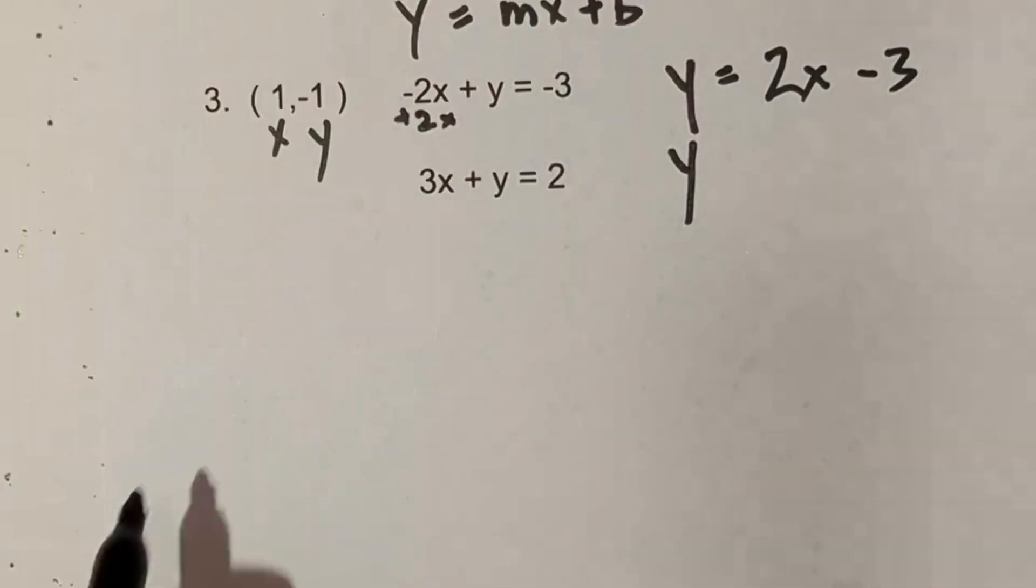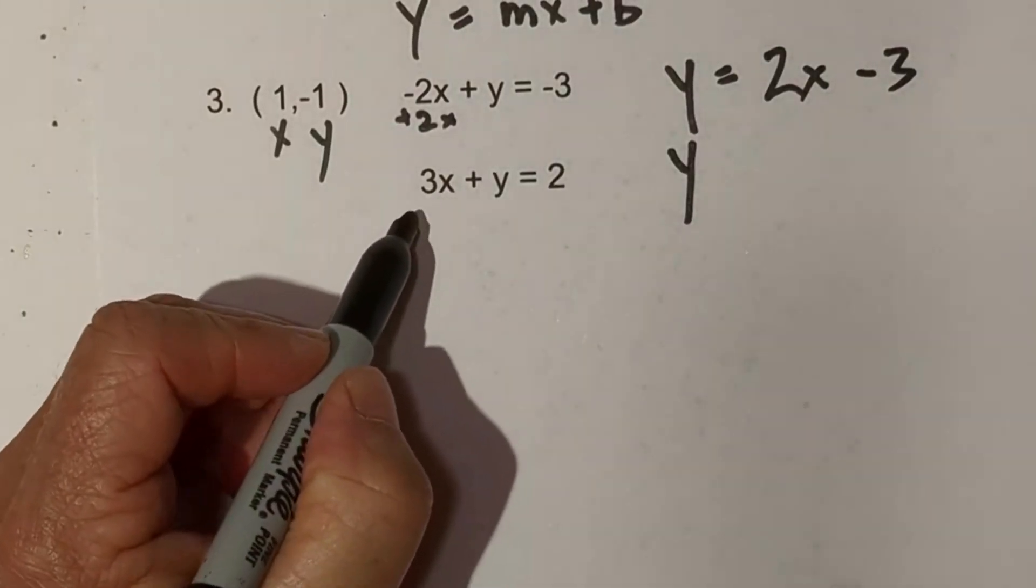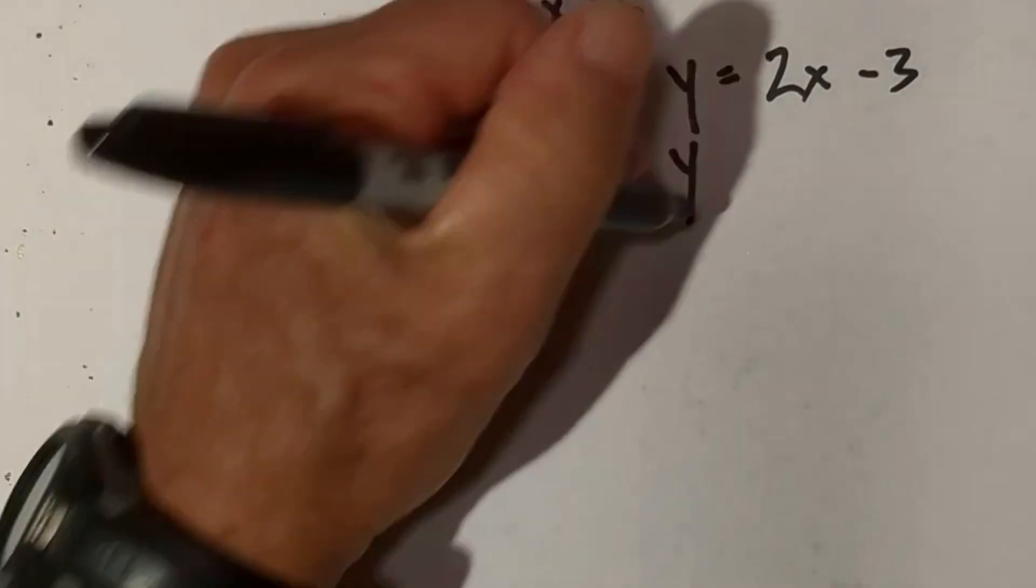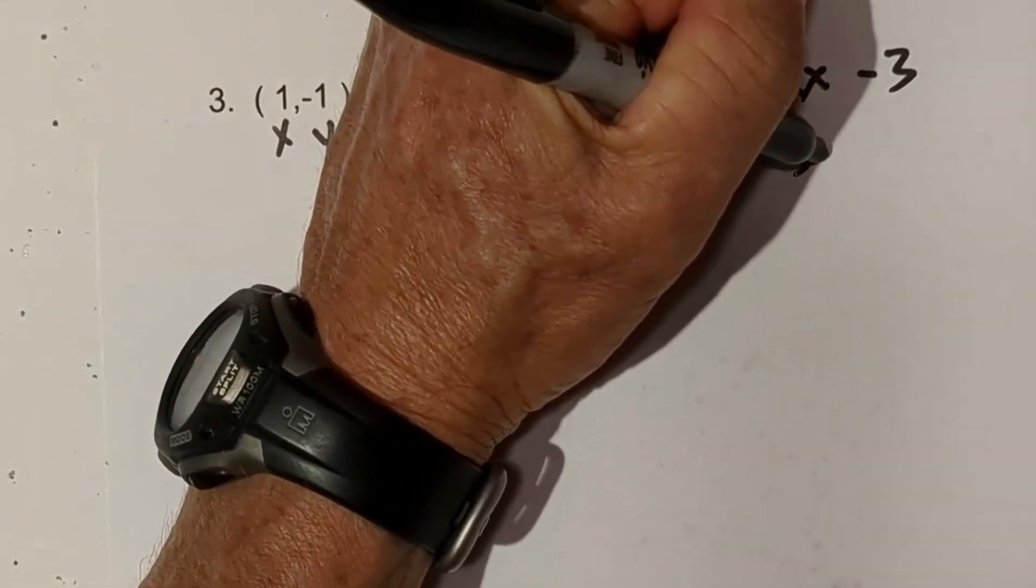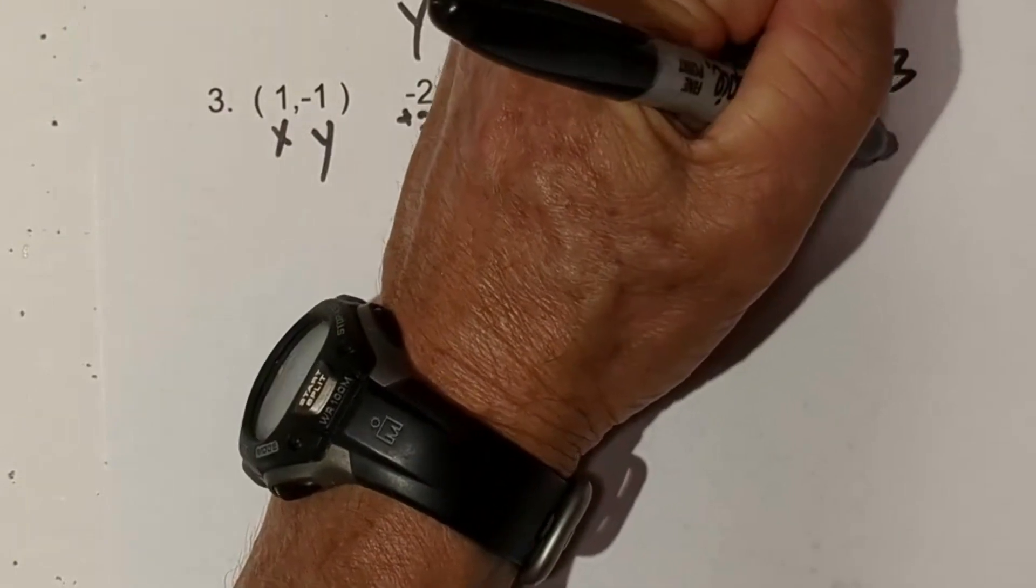And then for the other we have y, and we're going to do an opposite operation. And that equals y = -3x + 2.